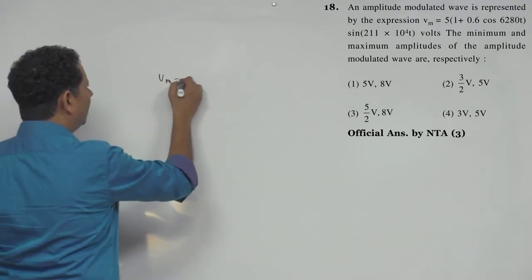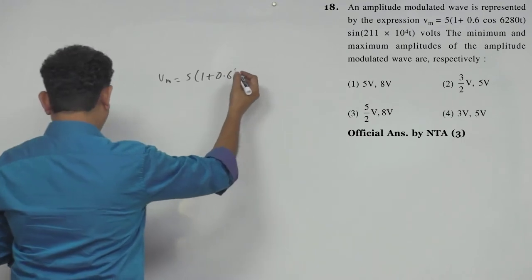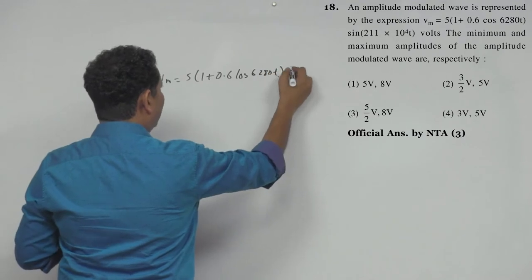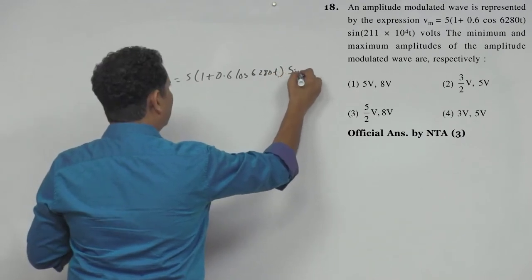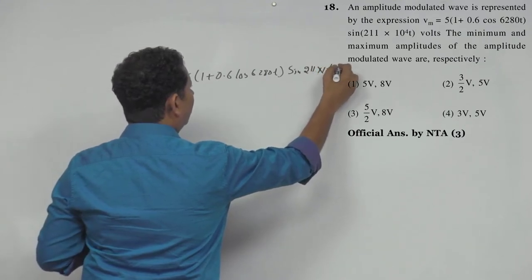vm is equal to 5(1 plus 0.6 cos of 6280t) multiplied by sine of 211 into 10 to the power 4t. This is the expression.